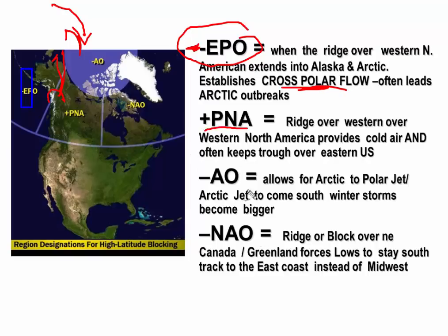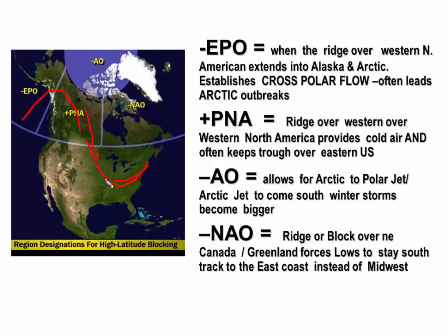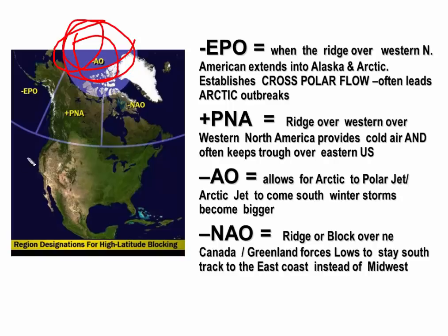The positive PNA refers to the west coast ridge. That brings in some cold air, but it also keeps the trough over the eastern United States, so low pressure areas develop there and you end up with possible winter storms on the East Coast, the Appalachian Mountains, or the Ohio Valley. The negative Arctic Oscillation allows the Arctic and polar jets to come southward, creating more phasing between the subtropical jet and the Arctic or polar jet — and this allows winter storms to become bigger. When the AO is positive, the Arctic jets stay far north and you get no phasing.